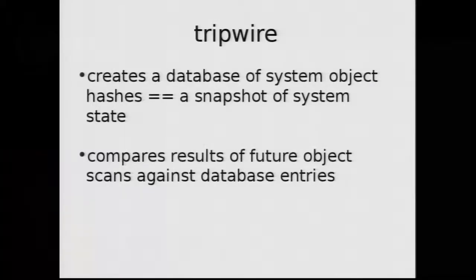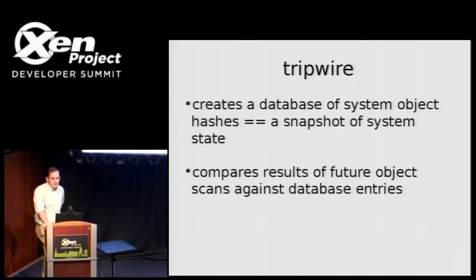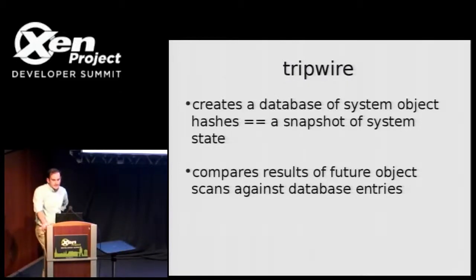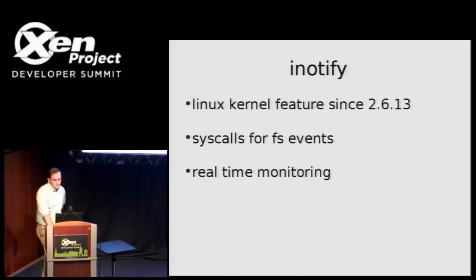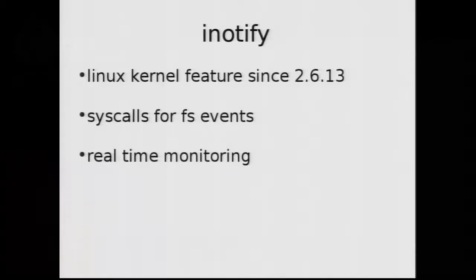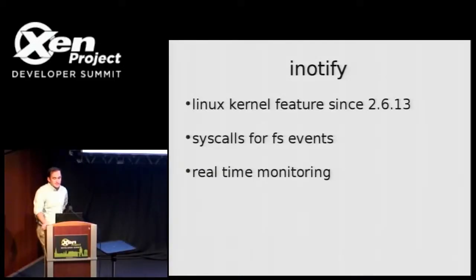Moving along to Tripwire — it's your classic Unix file integrity checker, a tool that runs at the application level inside the target environment. When initialized, it creates a database of system object information, basically hashes of the files, amounting to a snapshot of the current system state. It compares future object scans, generally run on a cron job, against existing entries to detect changes and notify the user admin. iNotify was added to the Linux kernel to support monitoring of file system events reported to applications, amounting to real-time file system monitoring, but also from within the target environment.